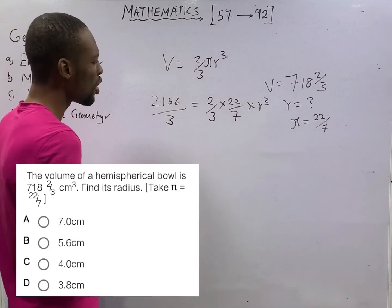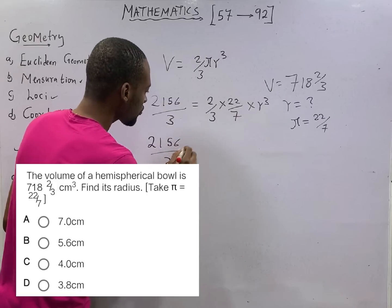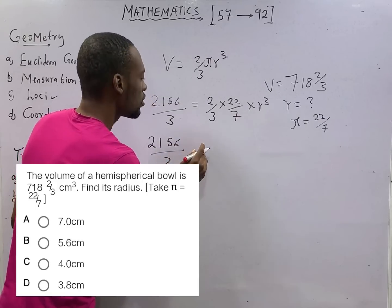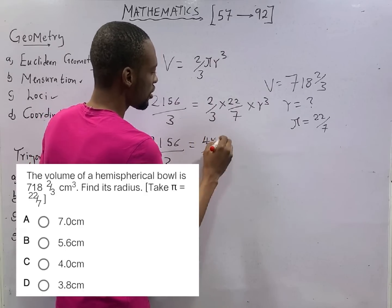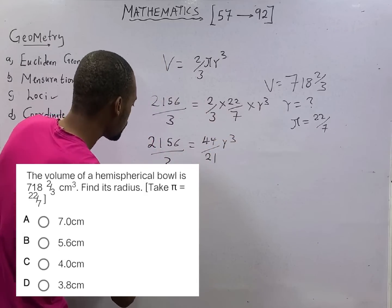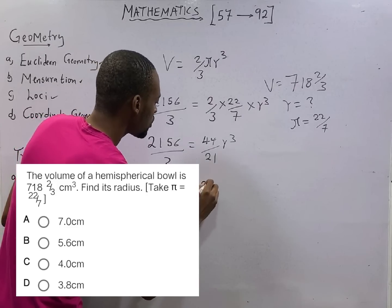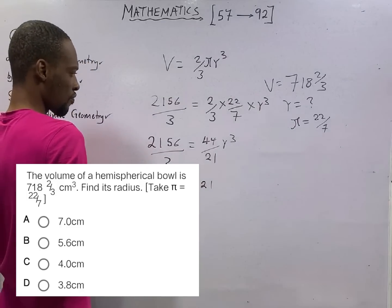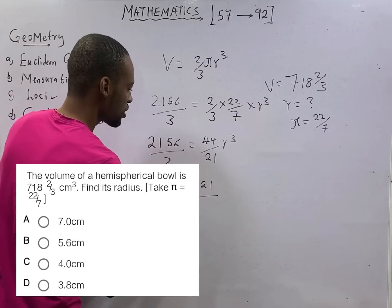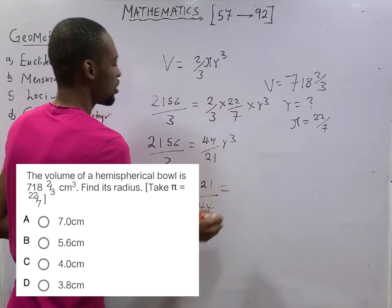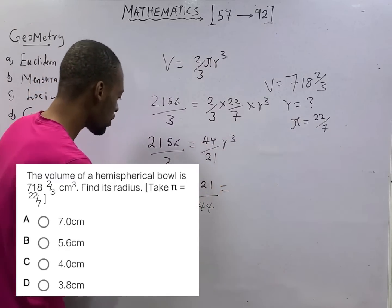Now cross multiplying, or whatever you wish to do, you should have 2156 over 3. This is okay, 44 over 21 r cube. R cube should be 2156 times 21 over 3 times 44.